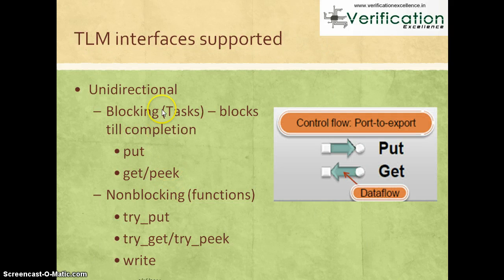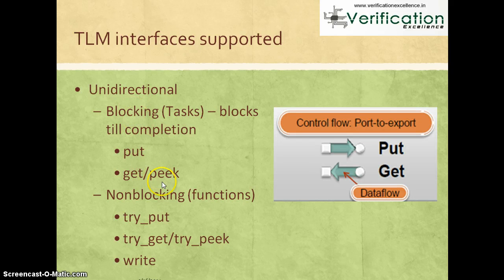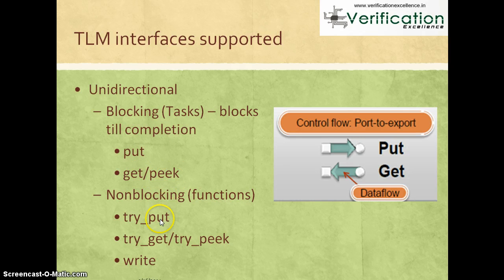In this last slide, some of the TLM interfaces supported by OVM and UVM are highlighted. On the unidirectional side, there are blocking and non-blocking interfaces. Blocking tasks block until completion — put and get are prime examples. For non-blocking, there are try versions of the same calls. We'll learn more about this in a later lecture.